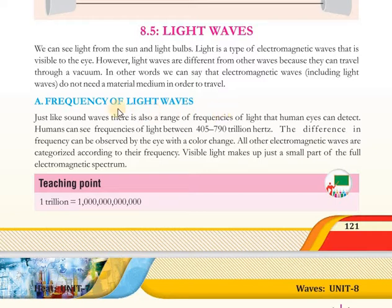جس طرح ہمارے سننے کی frequency range ہے, اسی طرح light waves جو ہم دیکھ سکتے ہیں اس کی بھی ایک frequency range ہے which our human eyes can detect. اس کی range ہے 405 سے لے کر 790 trillion hertz تک۔ Trillion جو ہے نا 1 کے بعد 12 zeros ڈالیں تو 1 trillion ہوتا ہے۔ تو بہت ہی چھوٹی اس کی wavelength ہے, اسی لئے اس کی frequency اتنی زیادہ ہے, اور یہ difference جو ہے ہم color range کی فارم میں دیکھتے ہیں۔